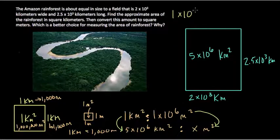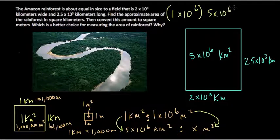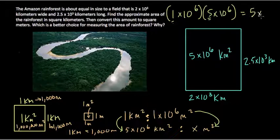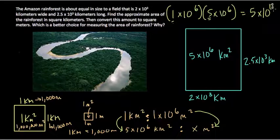Every single kilometer square has 1 times 10 to the 6th meters squared. So if we have 5 times 10 to the 6th kilometers squared, multiplying that by 1 times 10 to the 6th, we get what? We'll multiply the 5 and the 1 to get a 5. Multiply our 10 to the 6th and get 10 to the 12th meters squared.